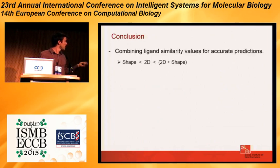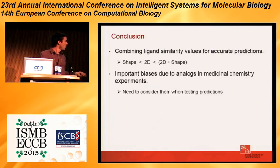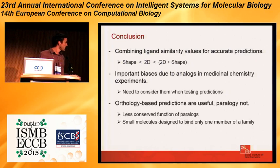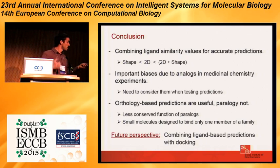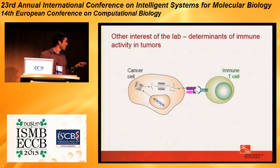In summary: combining 2D fingerprint and shape similarity is useful in some cases; we found important biases in the dataset and attempted to address them; orthology-based predictions are useful while paralogy does not add much. A future perspective would be to combine this ligand-based approach with a more structural view by docking these ligands, to see whether that further helps.